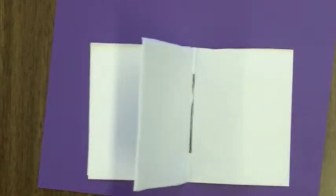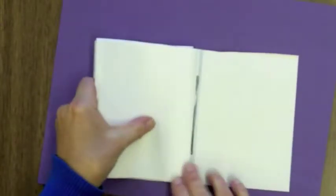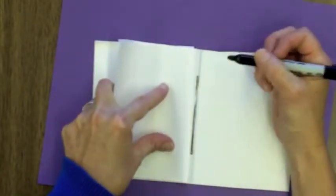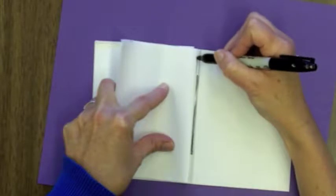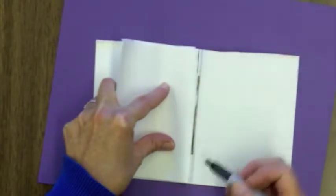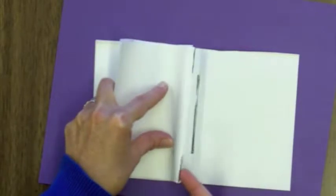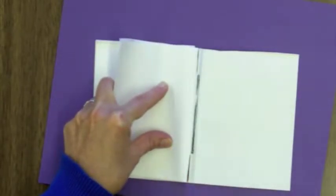Now take the other pages and lay them right here, because what you're going to do is you're going to mark on the crease on those pages a line like this, as long as the place where you didn't draw the line on the other one.